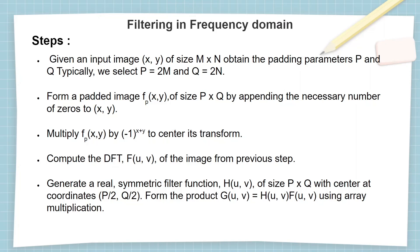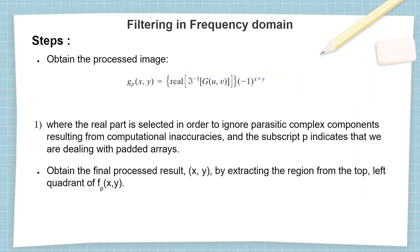In step 4 apply the forward DFT to obtain the frequency domain representation of the image. In step 5 generate a filter of size p×q with its center at (p/2, q/2), then multiply the image and the filter to form the filtered output stored in g(u,v). Now apply the inverse Fourier transform to obtain the image in spatial domain, then multiply by (-1)^(x+y) to compensate the previous multiplication in step 3. Finally extract the top-left quadrant of fp(x,y) which is the desired output.